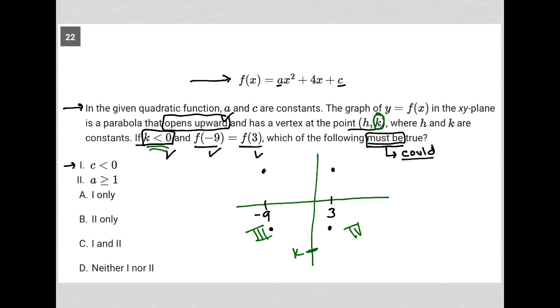The first option for what must be true is that c is less than 0. Well, what is c? C is actually the y-intercept. The y-intercept, remember, is what you find for y when x equals 0. So we can see if x were 0, that would go to 0, this would go to 0, and we just have c left over.